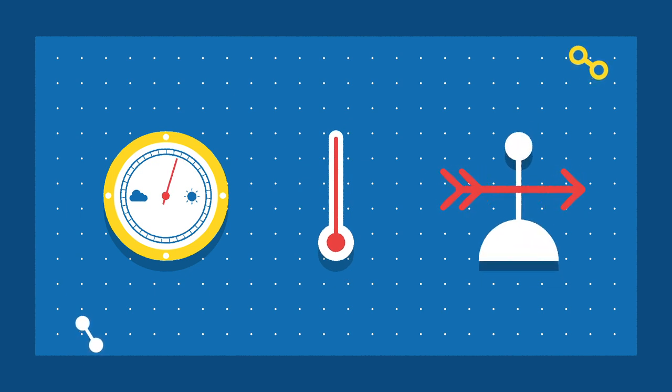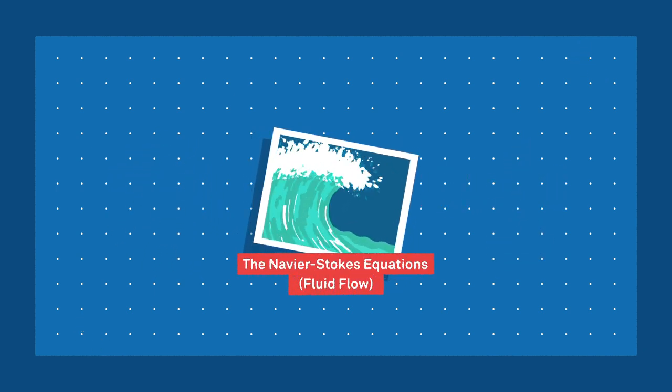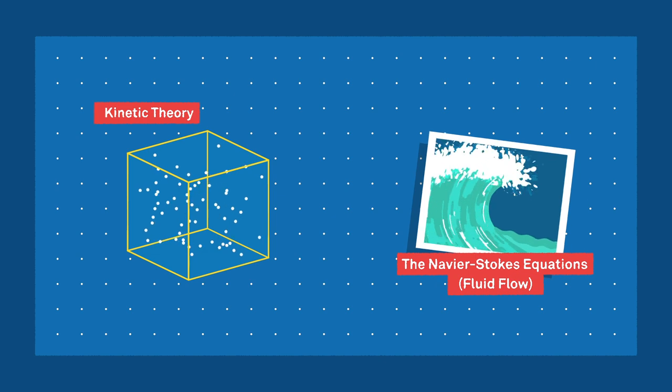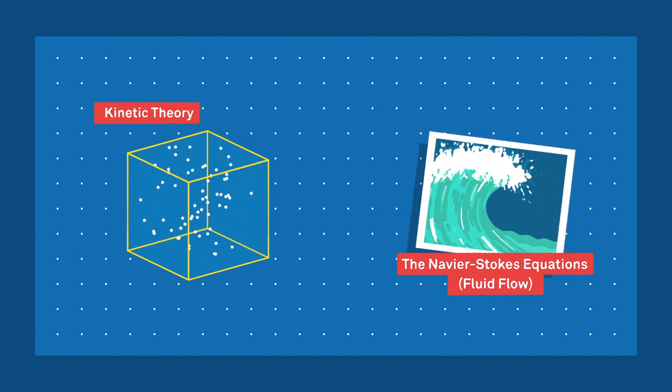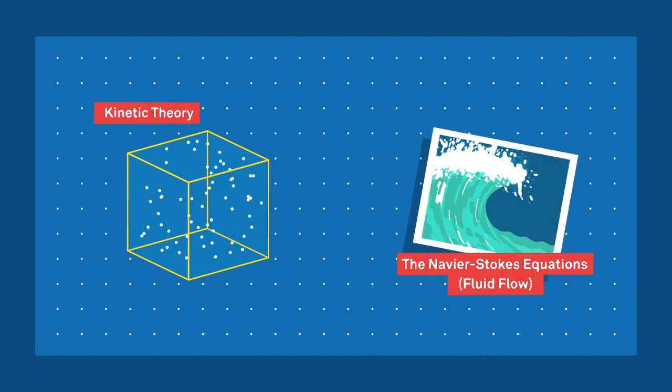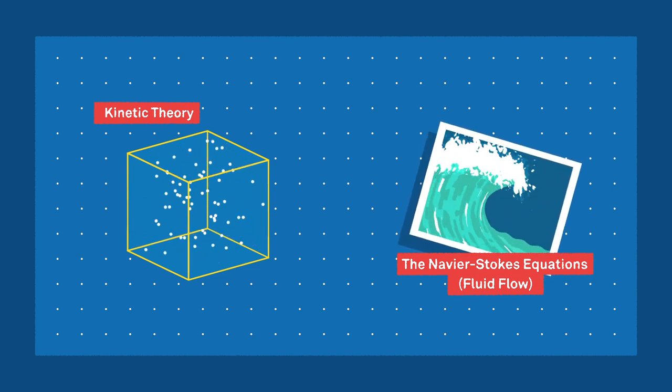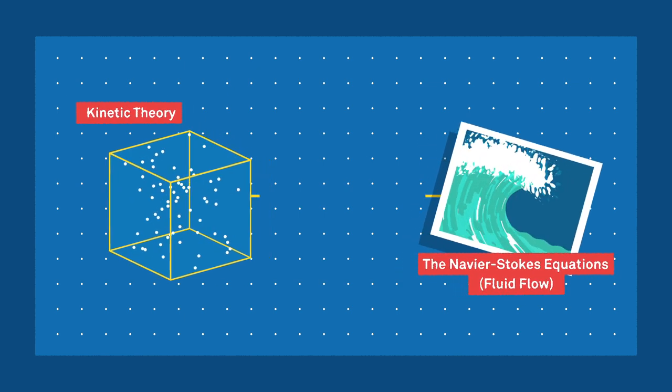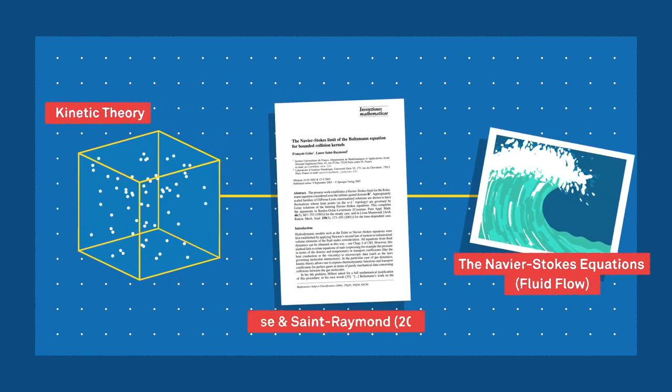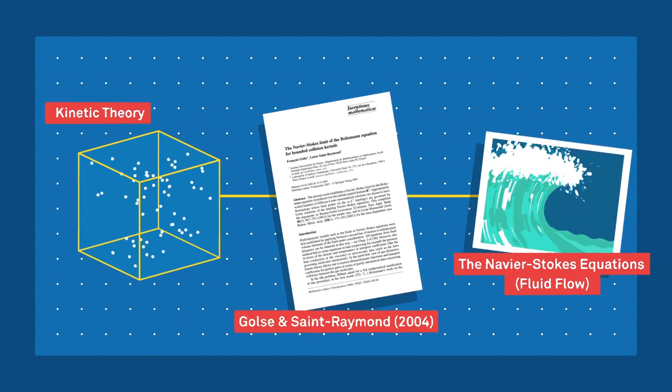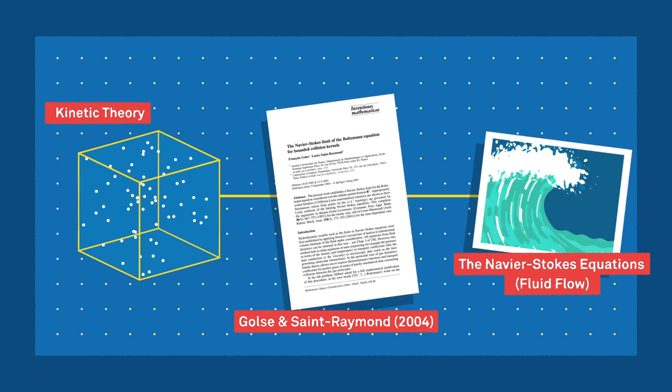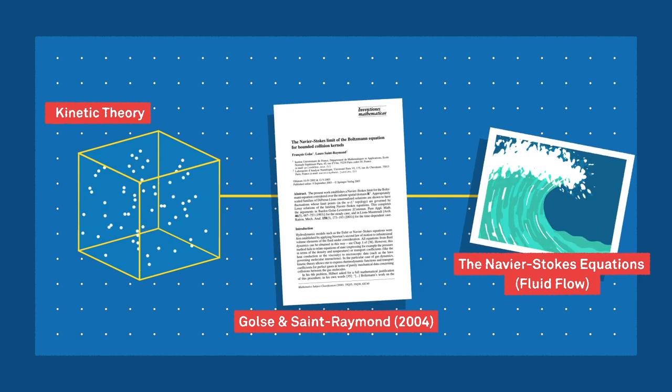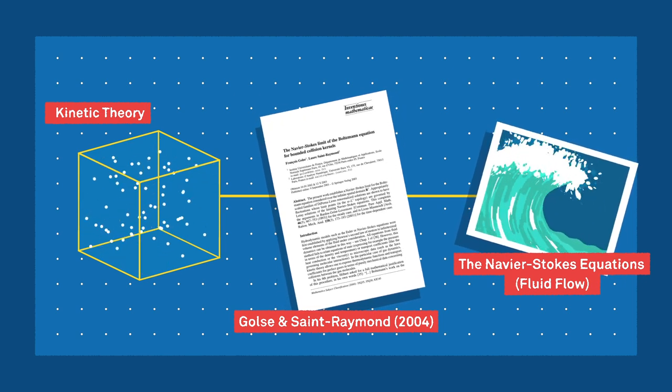Mathematically, fluids in our macroscopic world are described by the Navier-Stokes equations, and fluid limits refer to regimes when the collision process is much faster than the transport process, so that the gas is locally at thermodynamic equilibrium. In a major achievement in 2004, François Golce and Saint-Ramon connected kinetic theory with Navier-Stokes, assuming only that the gas has finite energy and entropy.